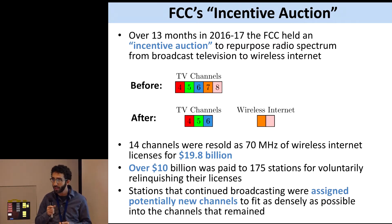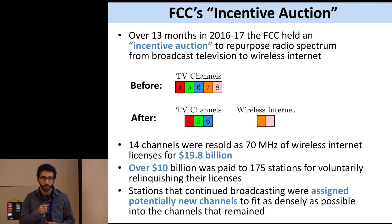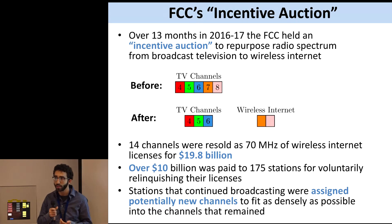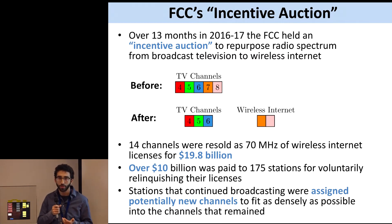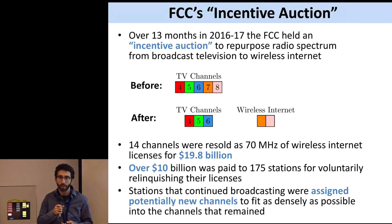This talk is actually about the FCC's incentive auction. The Federal Communications Commission in the United States ran an auction in 2016–2017, over 13 months. The goal was to repurpose radio spectrum from broadcast television to wireless internet, since fewer people watch TV through radio waves via antenna, while that spectrum is really valuable to mobile companies for data plans. Some TV channels get cut away and become wireless internet. In the actual incentive auction, 14 such channels were removed from the airwaves and sold for $20 billion; $10 billion was paid to stations to relinquish their broadcasting rights.